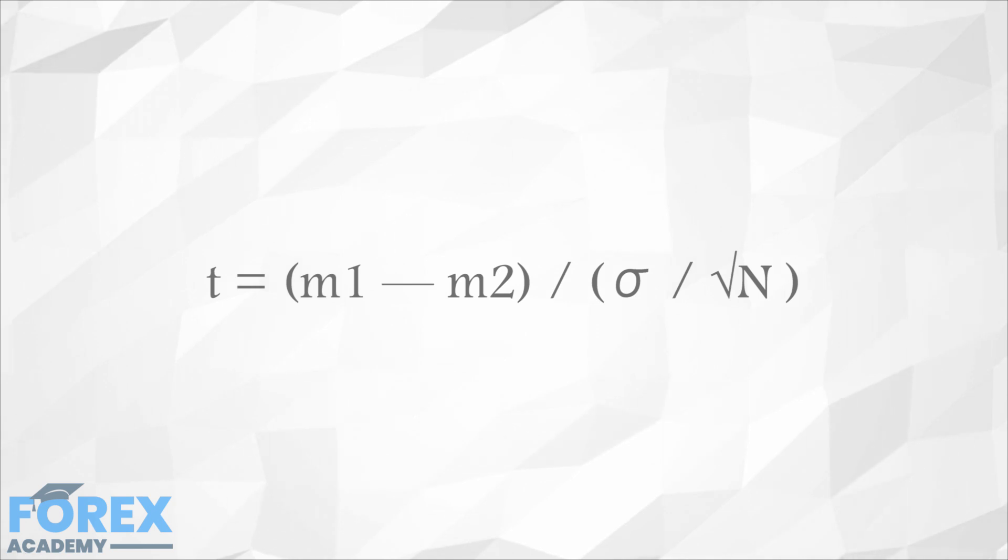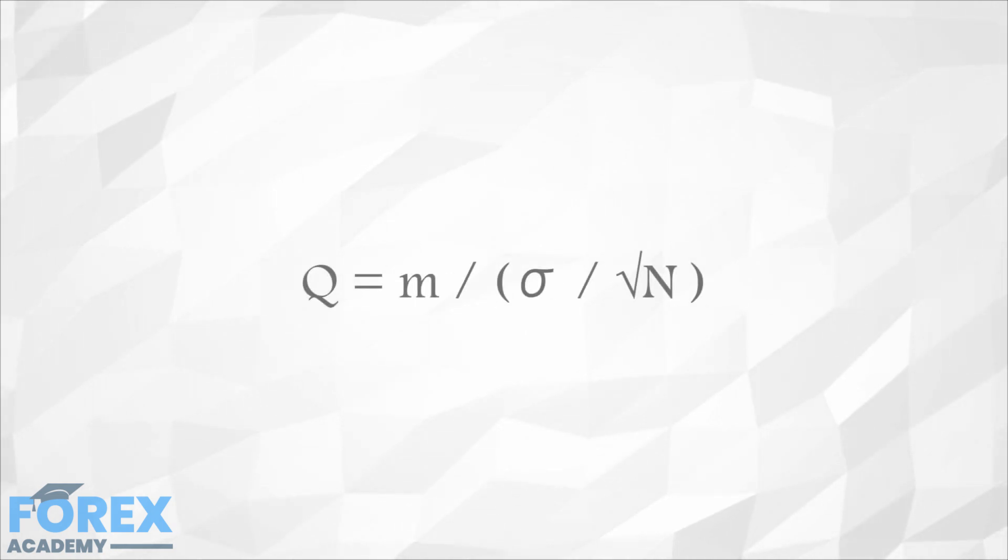The basic formula when the size of both groups is equal is as follows: where m1 and m2 are the averages of the two groups, and sigma is the standard deviation of the samples, assuming equal sigma on both. If m2 is zero or random, the formula simplifies to this, where we have changed the t letter for q, meaning quality.